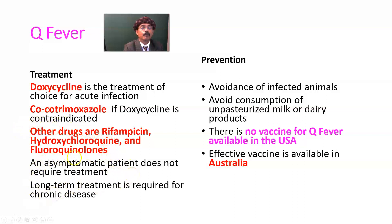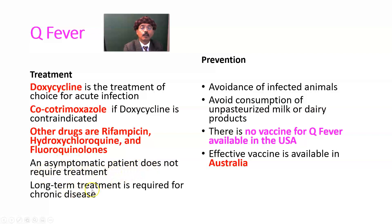Fluoroquinolones may also be used. In the case of chronic infection, we give more than one drug, such as rifampicin plus hydroxychloroquine, or fluoroquinolones. Asymptomatic patients do not require treatment. Long-term treatment is required for chronic disease.